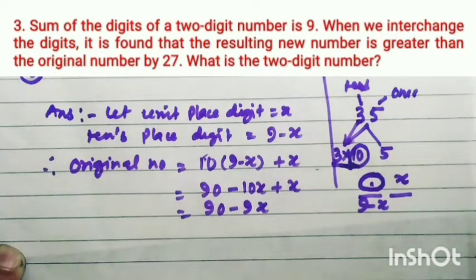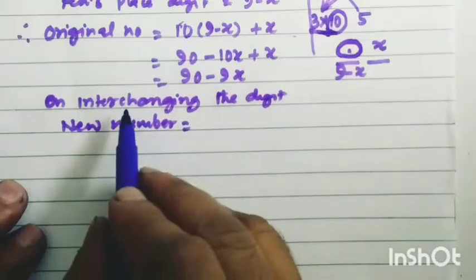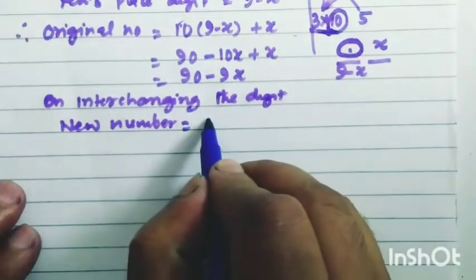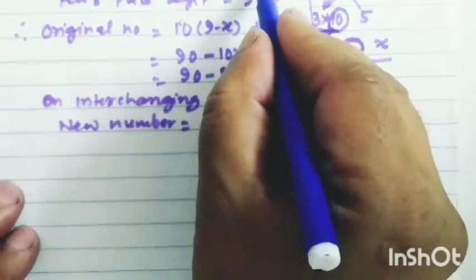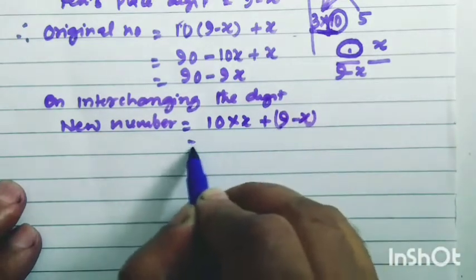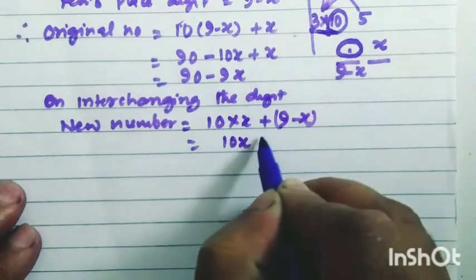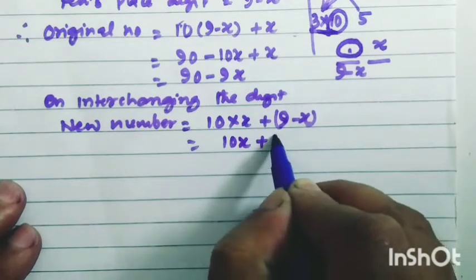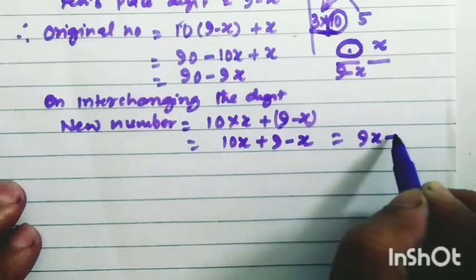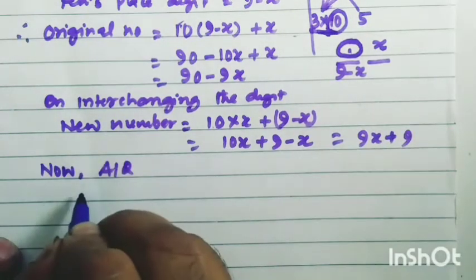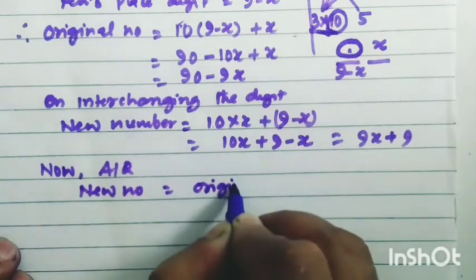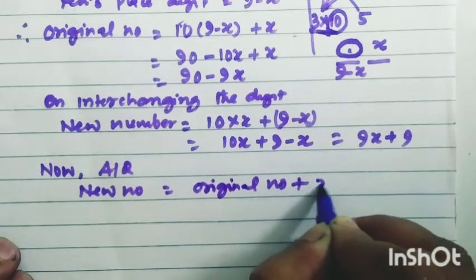Again, when we interchange the digits, the new number equals 10 into (units place digit) plus (tens place digit), that is 10 into x plus (9 minus x), which equals 10x plus 9 minus x, giving 9x plus 9. Now, according to the question, new number equals original number plus 27. So 9x plus 9 equals (90 minus 9x) plus 27.